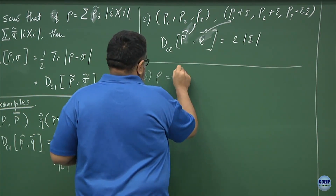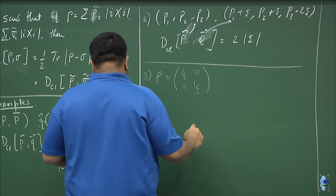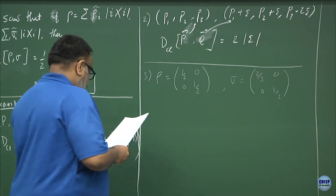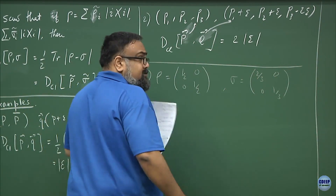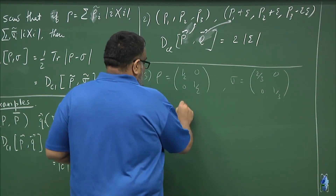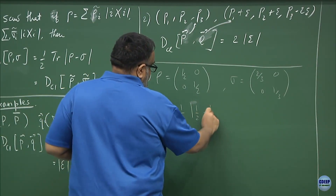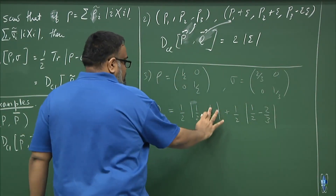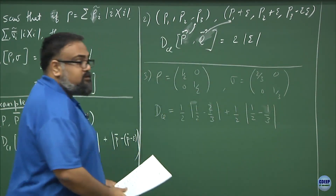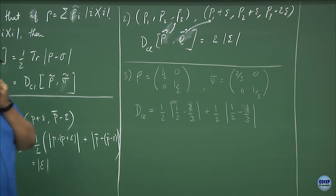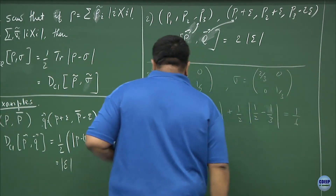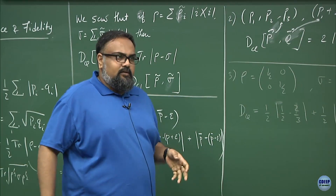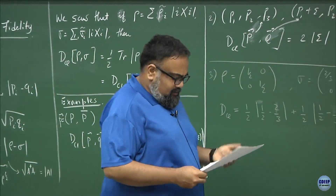Let us take Example 3, where rho is the diagonal matrix (1/2, 1/2) and sigma is (2/3, 1/3). You can calculate either the quantum or the classical version — you should check that both are the same. It is half |1/2 − 1/3| + half |1/2 − 2/3|, which works out to 1/6. I urge you to also do it the technical way, which I will explain in a moment.